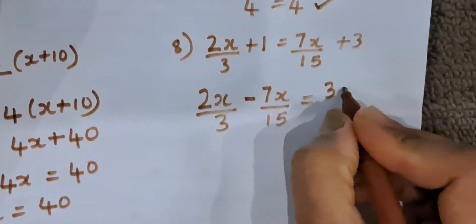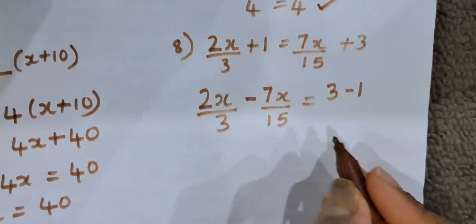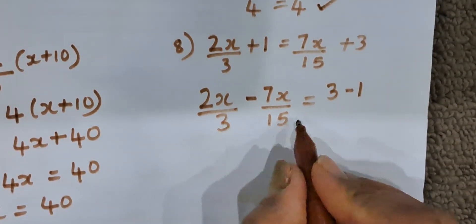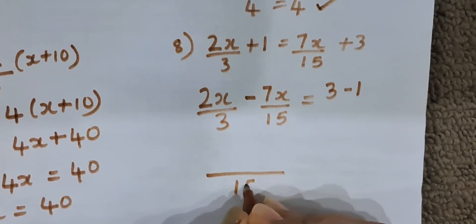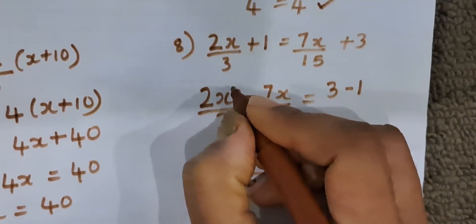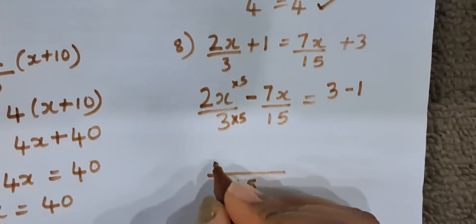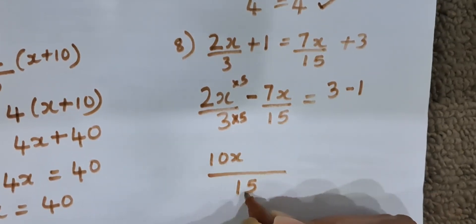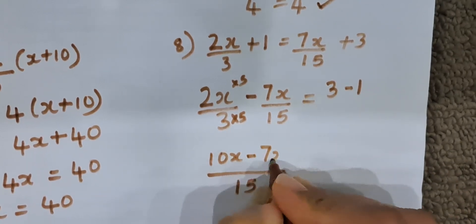Minus 7x by 15 is equal to 3, and 1 we will take on the right hand side, it becomes minus 1. Now, we will make the denominators equal. We will take the LCM of 3 and 15, which is 15. 3 fives are 15, so 2x also we have to multiply with 5. 2x multiplied by 5 becomes 10x. 15 ones are 15, so 7x remains as it is. Minus 7x.